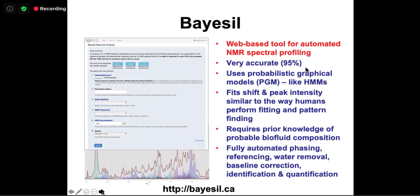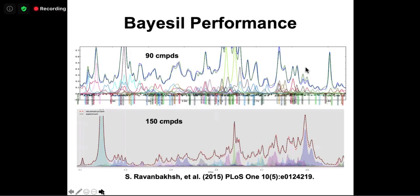Hidden Markov models are a form of probabilistic graphical modeling used in speech recognition — Siri, Alexa, Amazon, and Google Home all use them to recognize voice patterns. We treat the NMR spectrum like a speech or voice pattern. Just as Siri needs to know you're speaking English, BASIL needs to know whether you're analyzing serum versus urine versus a plant extract, so it has an idea of what compounds to typically find.